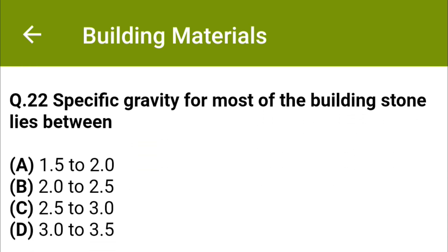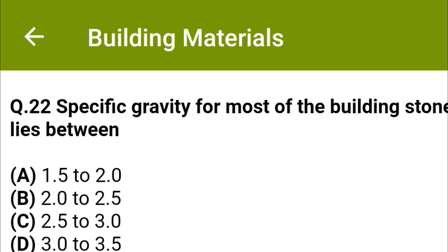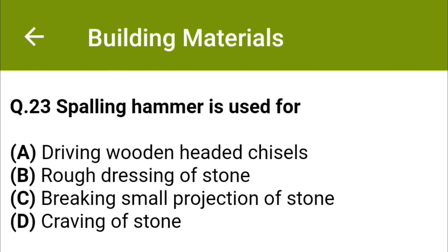Specific gravity for most building stones lies between Option A 1.5 to 2.0, Option B 2.0 to 2.5, Option C 2.5 to 3.0, Option D 3.0 to 3.5. The correct answer is Option C, 2.5 to 3.0. Sparling hammer is used for Option A driving wooden-headed chisels, Option B rough dressing of stone, Option C breaking small projections of stone, Option D curving of stone.